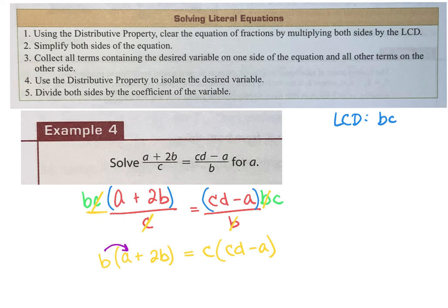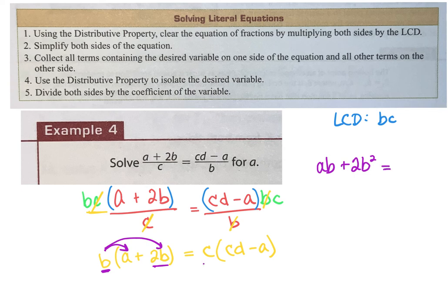I'm going to distribute: B times A gives me AB. Then B times 2B — remember properties of exponents, B times B is B squared — so B times 2B is 2B squared. On the right-hand side, I distribute C through: C times CD gives C squared times D. Then C times A gives CA.